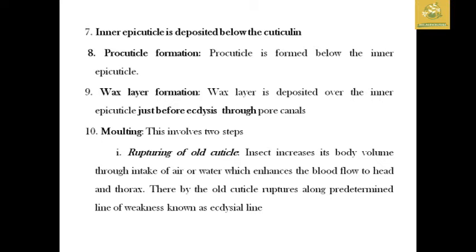Two major steps then follow. First is the rupturing of the old cuticle: the insect increases its body volume by intake of air, which enhances blood flow to the head and thorax, causing the old cuticle to rupture along the pre-formed line of weakness known as the ecdysial line.